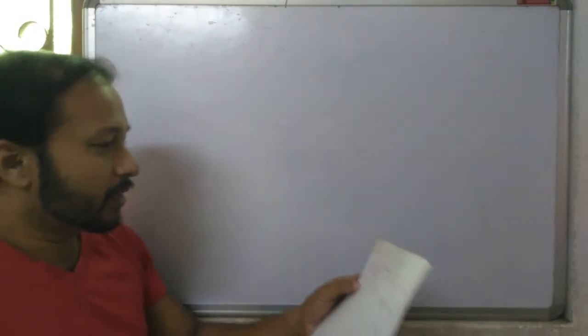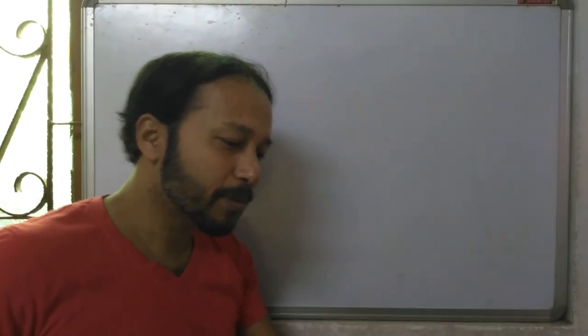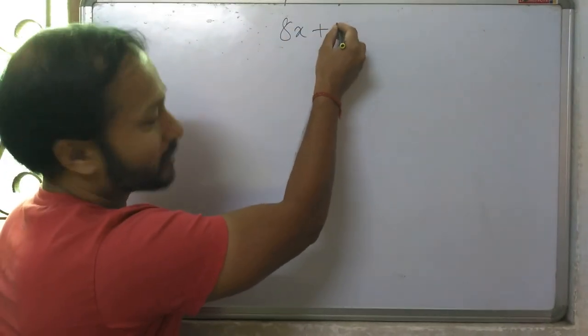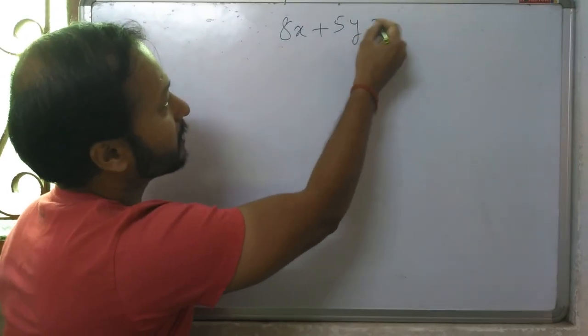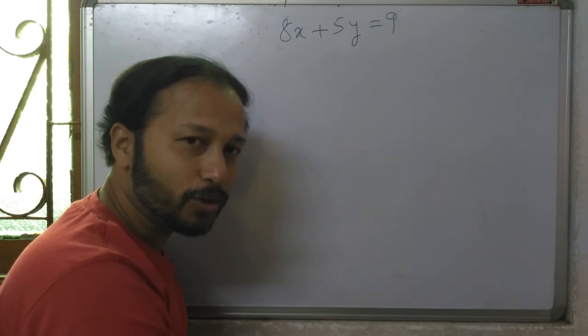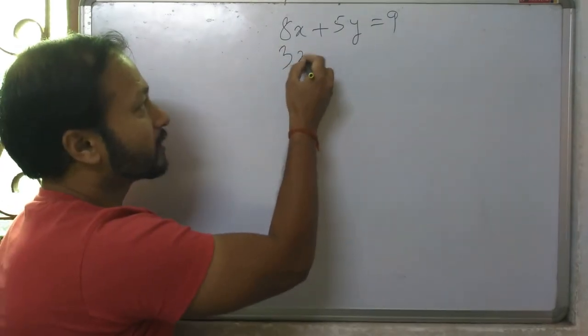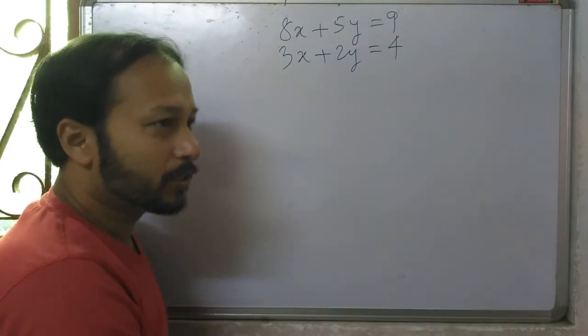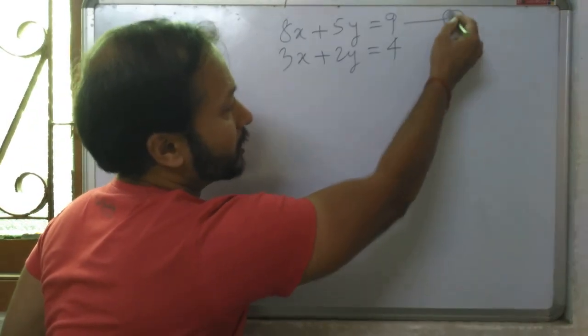Let us discuss. The question is: 8x plus 5y equals 9, and the second equation is 3x plus 2y equals 4. This is our first equation and this is our second equation.